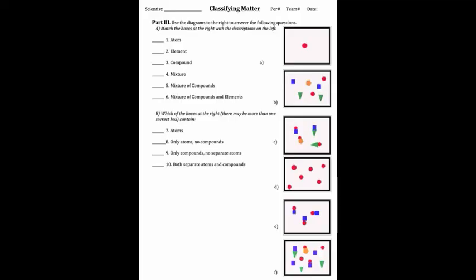Let's see what you've learned by answering some questions. Match the boxes on the right to the description on the left. Which box — A, B, C, D, E, or F — shows an atom? That would be box A. You see a single atom there.